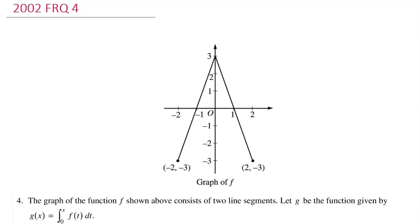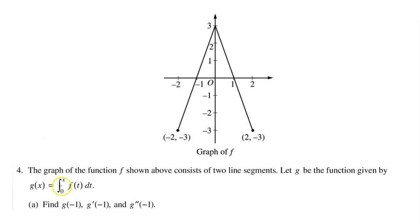In this video, I will walk you through free response question number four from the 2002 AP Calculus exam. The graph of the function f shown above consists of two line segments. Let g be the function given by the integral from zero to x of f at t dt.